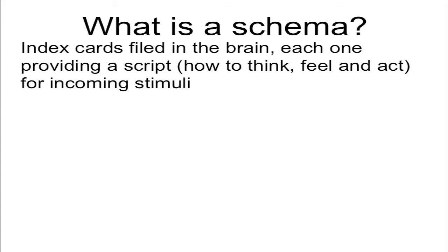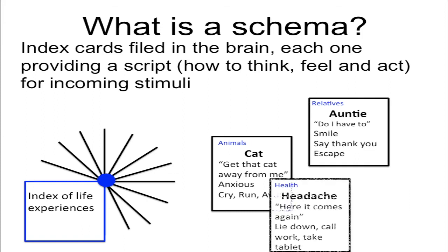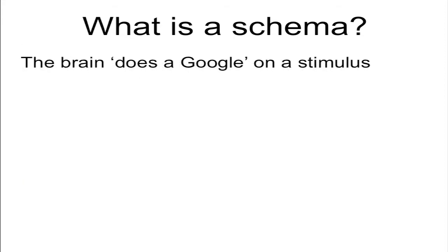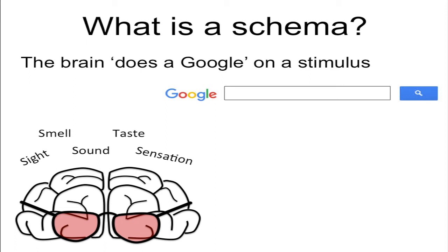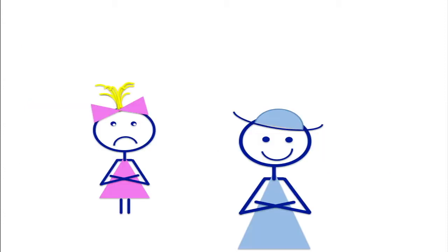Another way of thinking about a schema is as one of millions of index cards filed in the brain. And when we come across something in our environment, or maybe sense something in the body, we quickly pull out the corresponding index card that provides us with an immediate script for thinking and feeling and behaving. Think of the brain as a search engine that does a Google on a stimulus. The schema script that comes out on top is the one with the strongest survival value — not so much 'I'm feeling lucky' as 'I can't take any chances.'